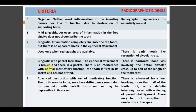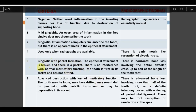Score 6: both clinical and radiographic findings — gingivitis with pocket formation, epithelial attachment is broken. No interference with normal masticatory function; tooth is firm in socket, not drifted; only horizontal bone loss involving the alveolar crest up to half the root length. Score 8: advanced destruction with loss of masticatory function — tooth may be loose, drifted, sounds dull on percussion with metallic instrument, or may be depressible (suggesting apical infection). Advanced bone loss involving more than half the tooth root, definite infrabony pocket, widening of PDL, possible root resorption.